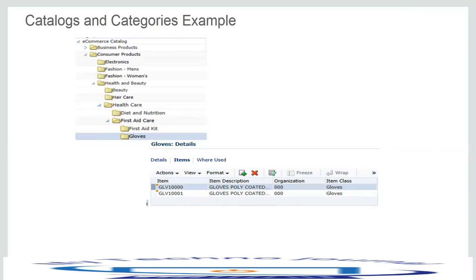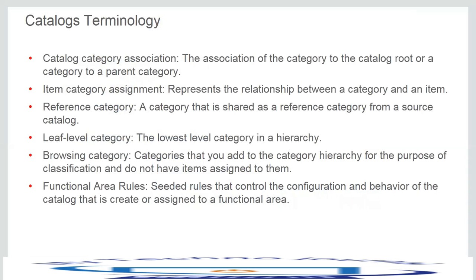You could see multiple gloves items — GLV 10000, GLV 100001 — those are the multiple items which have been assigned to the gloves category. This slide lists some important terms related to catalogs along with their description. The first one is catalog category association, which is the association of a category to the catalog route or a category to a parent category.